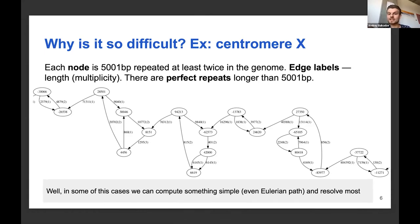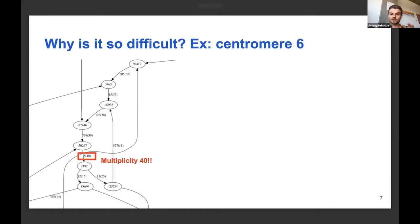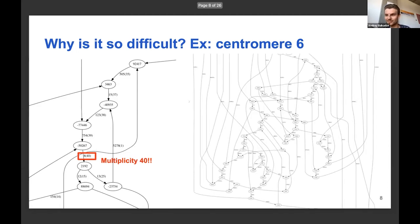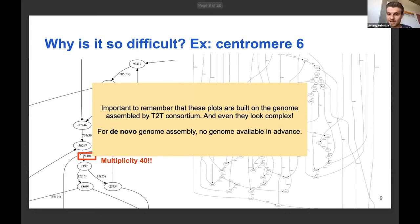This previous example was centromere X. Now here is an example of centromere 6 — even just a small snippet of the graph already shows an edge with multiplicity 40. You can imagine that topological arguments would be very difficult to use here to understand how the genome traverses the graph.